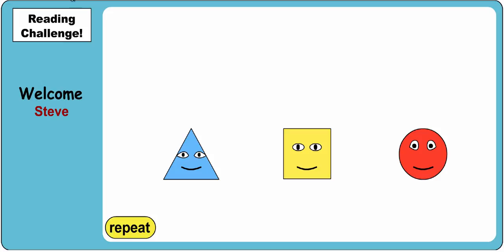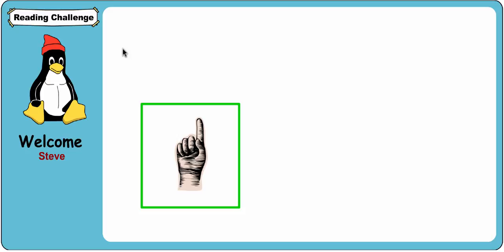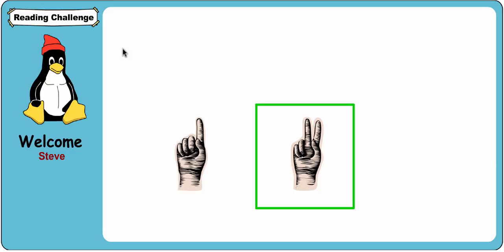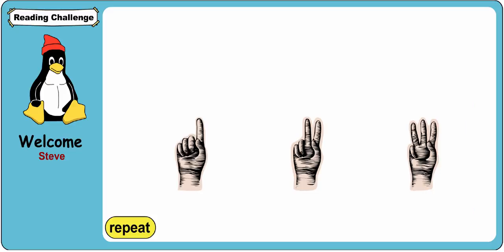Tie. Click on the shape that says the smallest sounds you hear in the word tie. One sound: tie. Two sounds: tuh, I. Three sounds: tuh, uh, I. This particular section is phoneme segmentation. It will vary based on the grade level of the student, although it is still based on their performance. Older students will get more complicated phoneme segmentation questions.